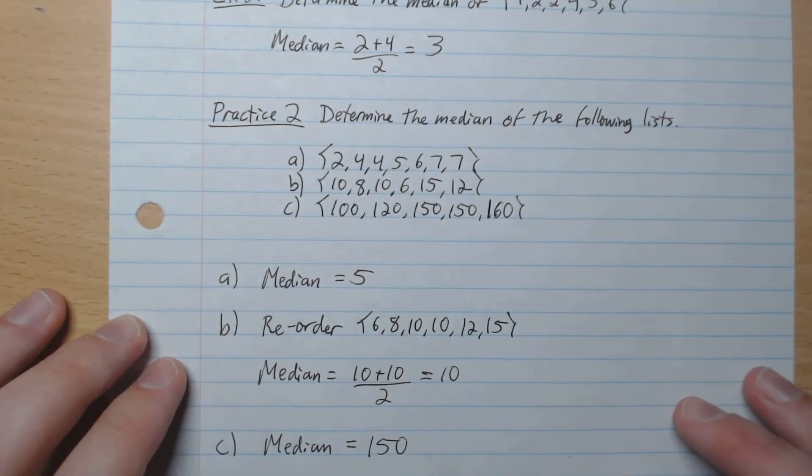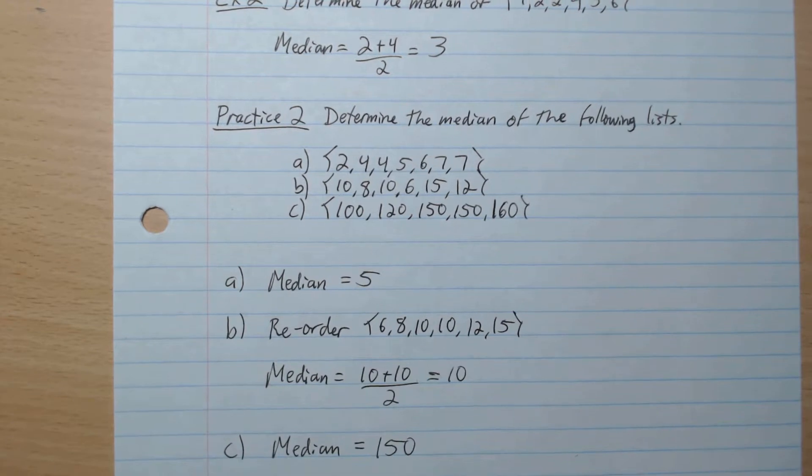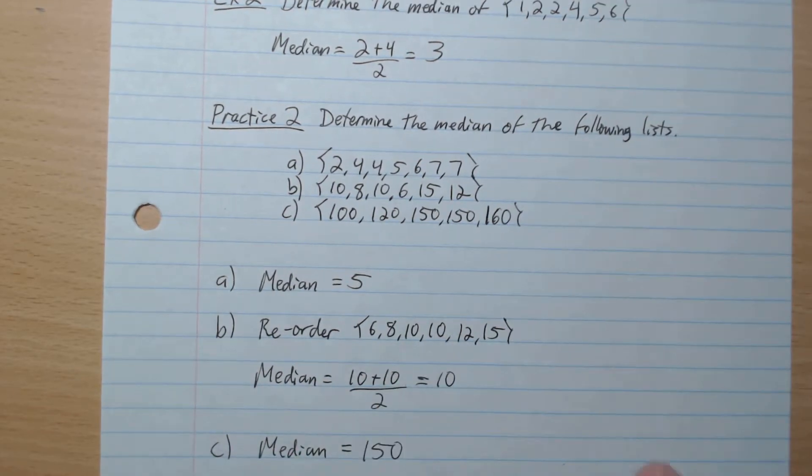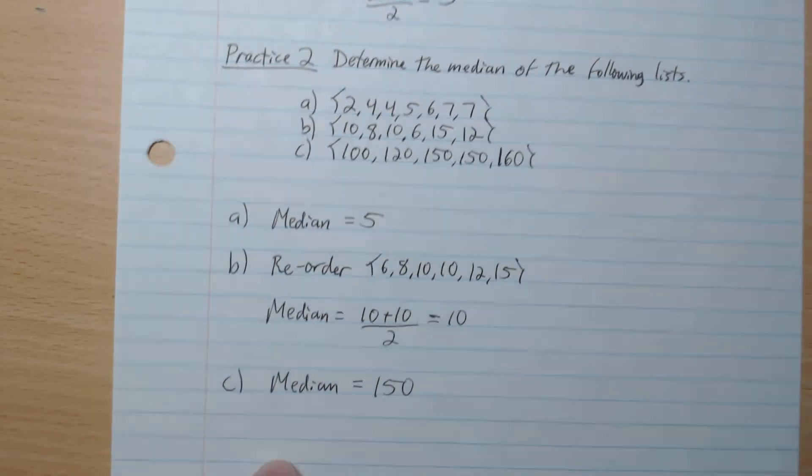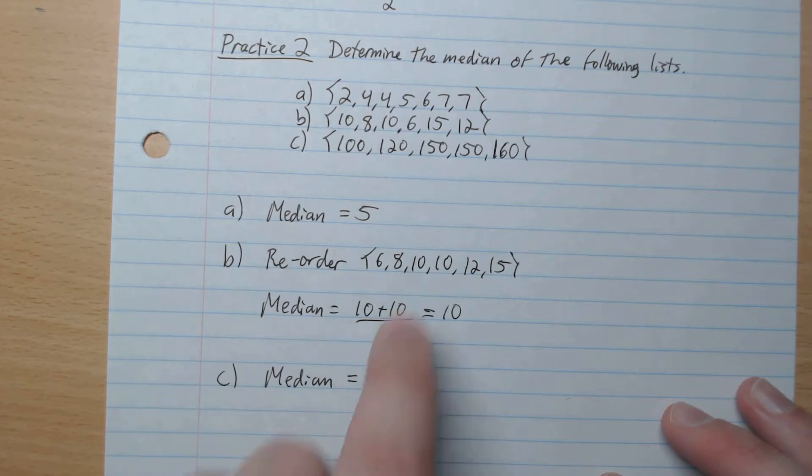Okay, so A, we go to the middle, which is 5. It's already in order like that, so that's good. B, we have to reorder its lowest to largest, so we order it like that. The two middles are 10 and 10. So the 10 plus 10 over 2 is 10. So the 10 is our median. C, the middle of this list here is 150, like that.